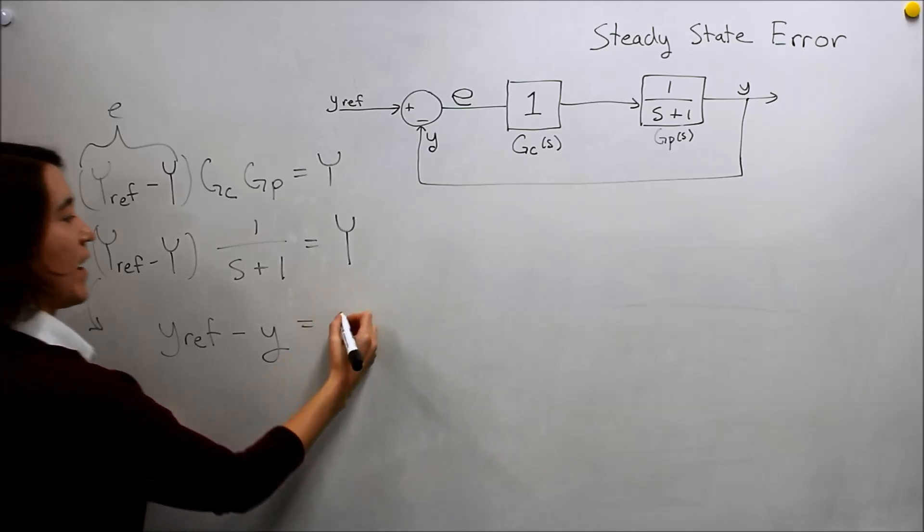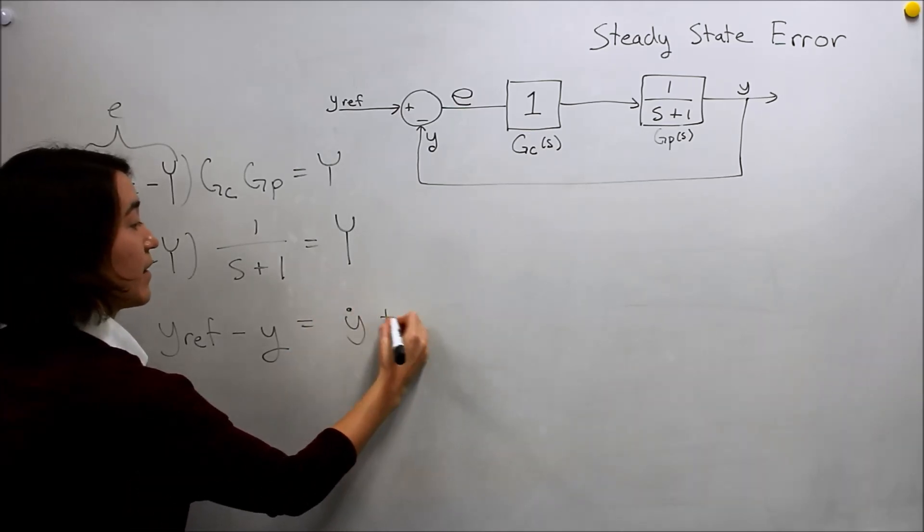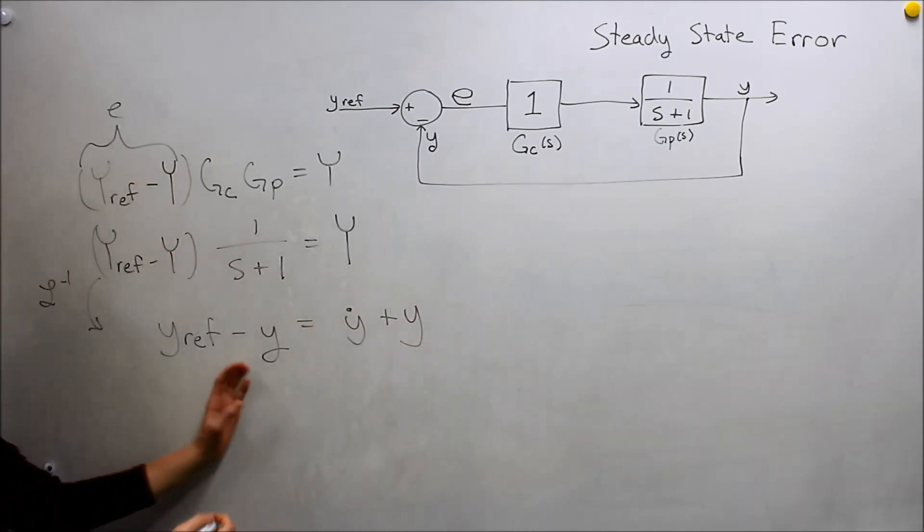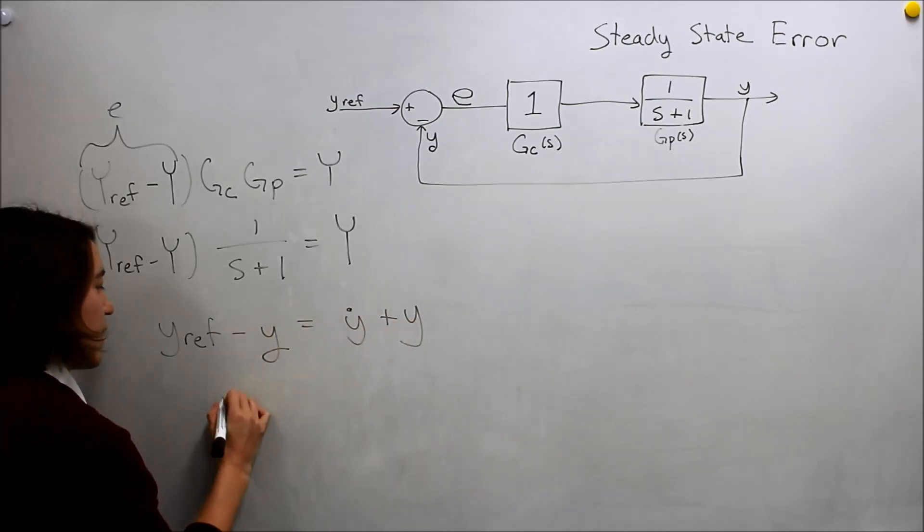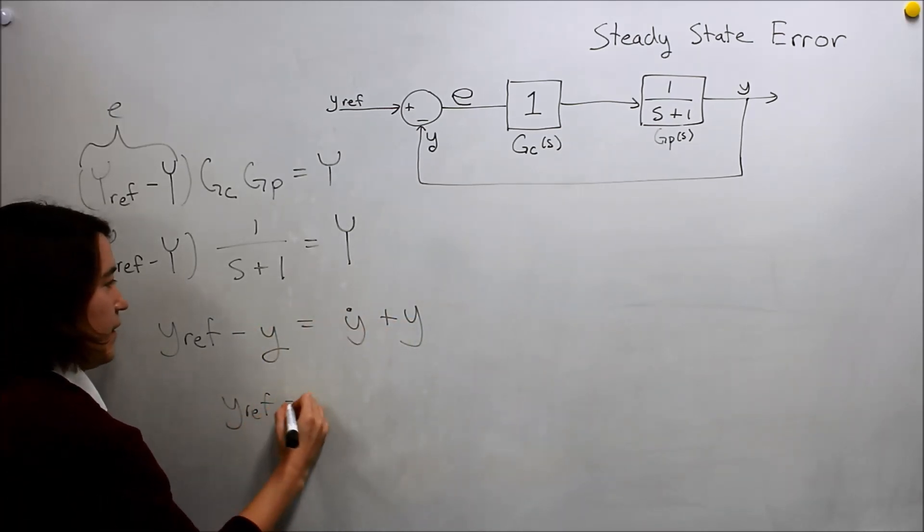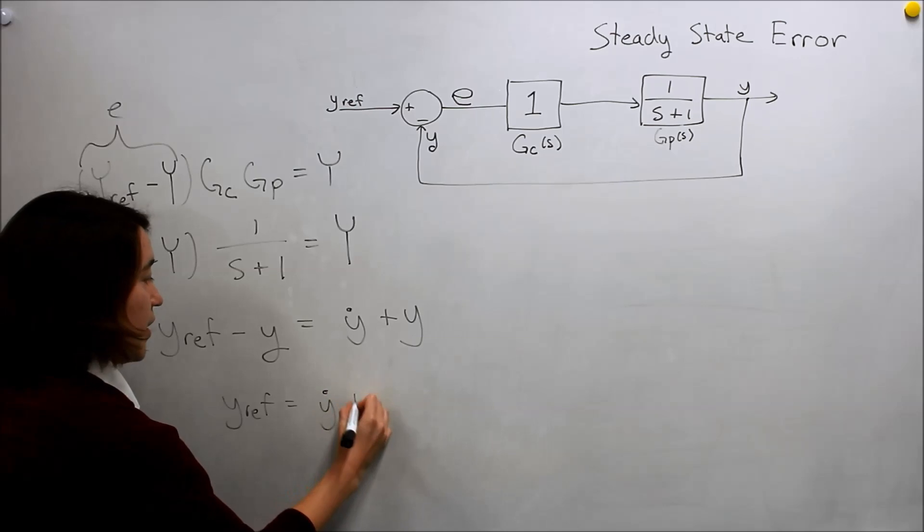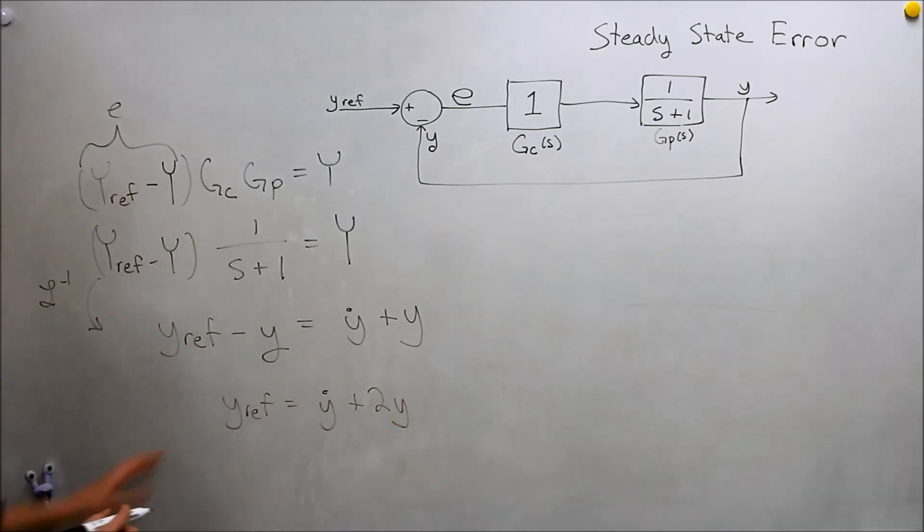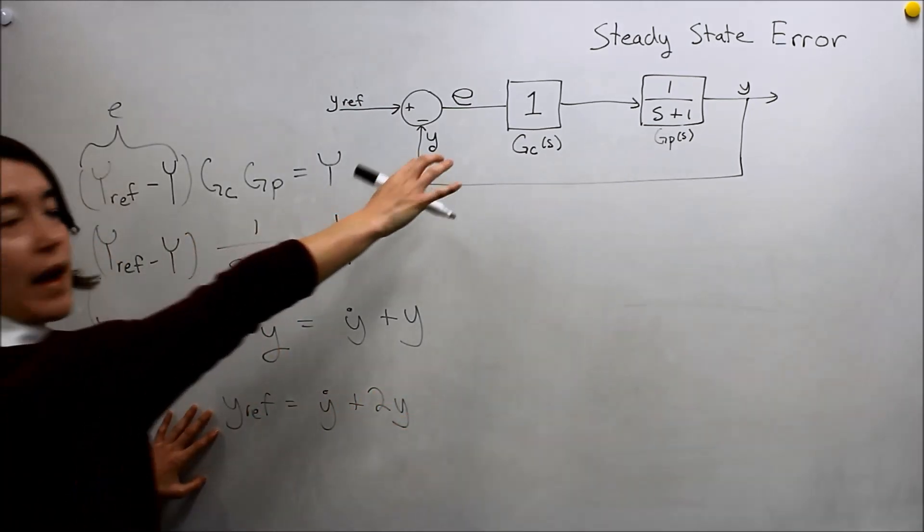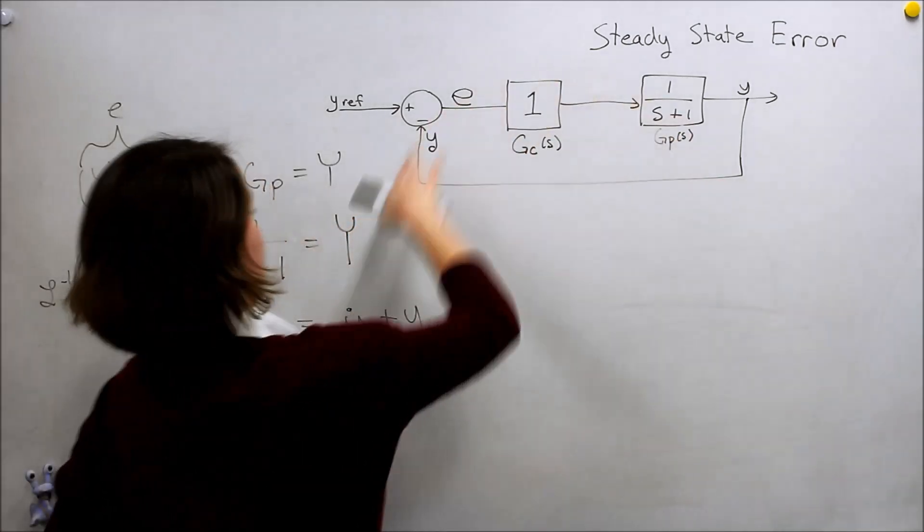Here we have the derivative of y plus y. If we move this y over here, we would get that y_ref is equal to the derivative plus 2 times y. This is our same equation as this system.